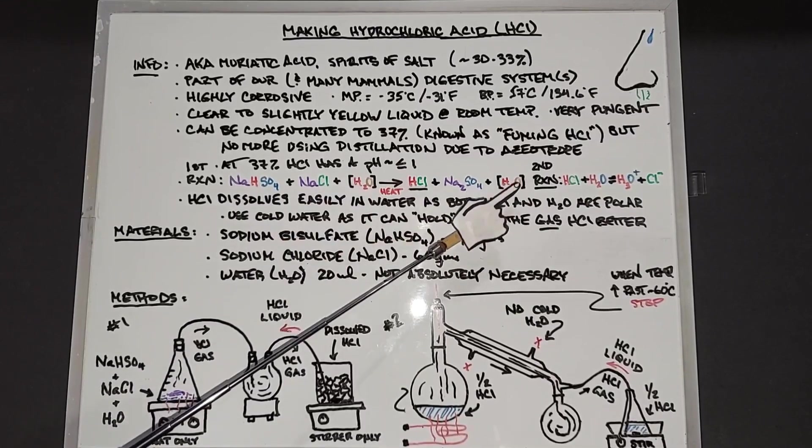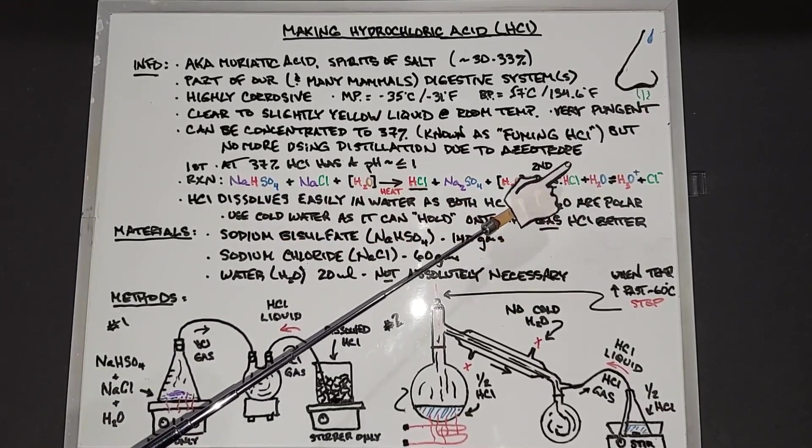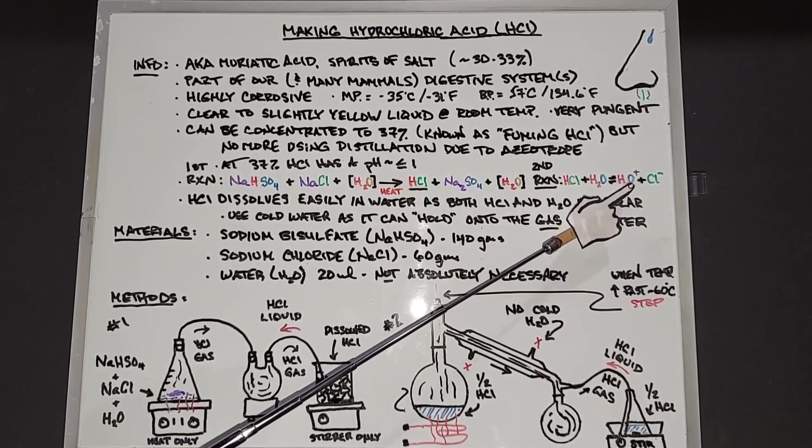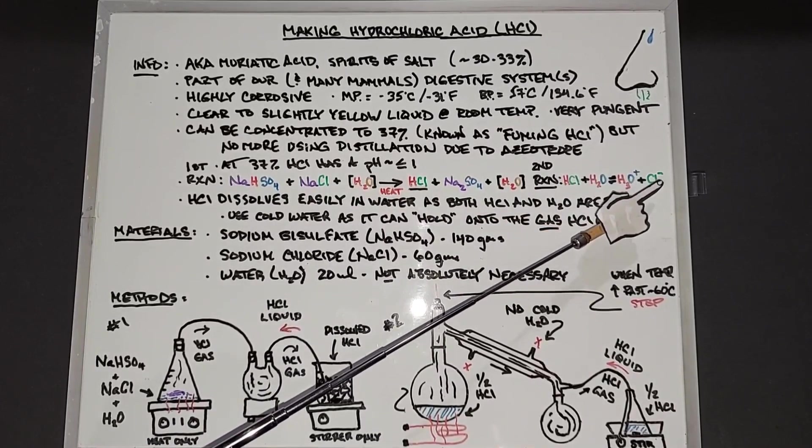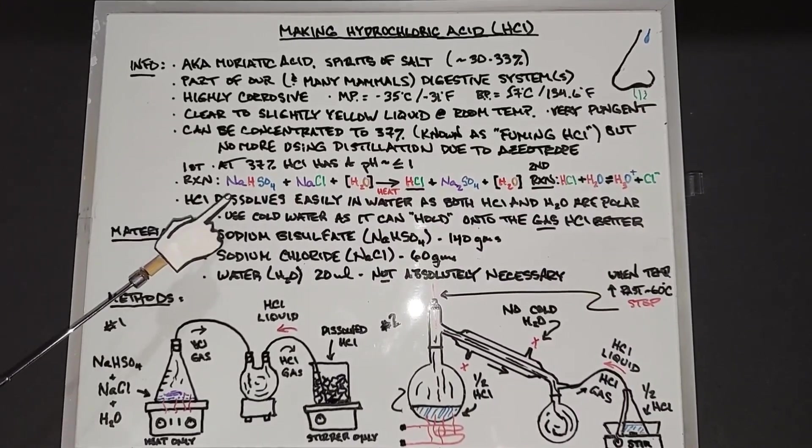The second reaction, which is when hydrochloric acid is mixed with water, you end up with the hydronium cation H3O+ with positive sign and the chlorine anion Cl- with the negative sign. These are in equilibrium, they move back and forth.